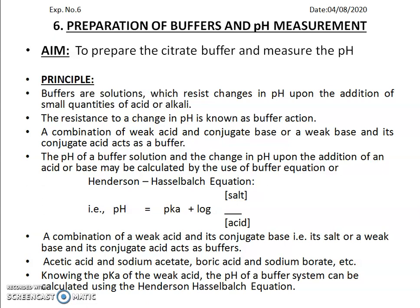Weak acid and its conjugate base, or weak base and its conjugate acid, will act as a buffer. The pH of a buffer solution and the change in pH upon addition of a small amount of acid or base may be calculated using the Henderson-Hasselbalch equation: pH = pKa + log(salt/acid). Here, the combination of citric acid and sodium citrate is used. Other examples include acetic acid with sodium acetate, and boric acid with sodium borate. By knowing the pKa of the weak acid, the pH of the buffer system can be calculated.